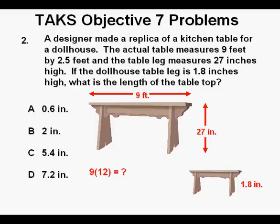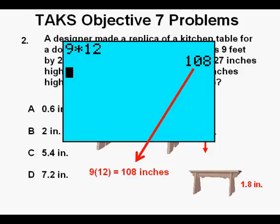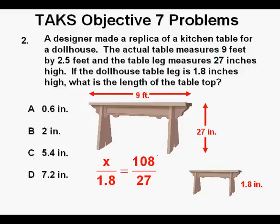We could change the dimensions to feet, but it's probably easier to change this 9 feet to inches. Converting to inches, what's 9 times 12? It's not too hard without a calculator, but since we have one, it's 108 inches. And the proportion setup is x over 1.8 equals 108 over 27.